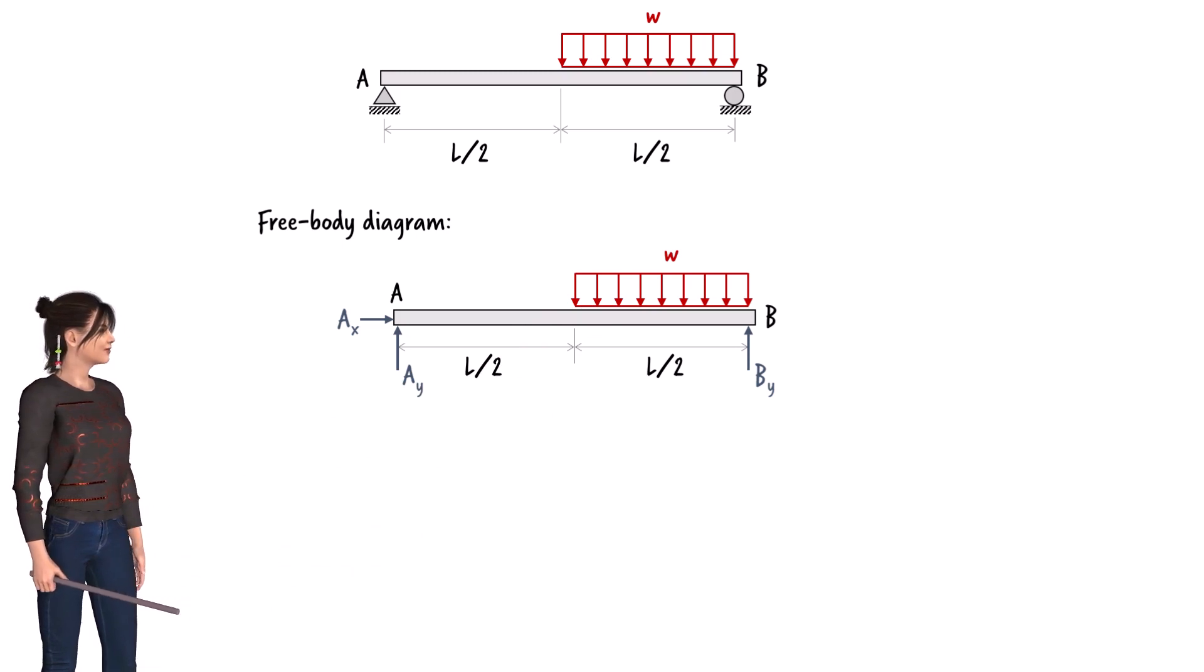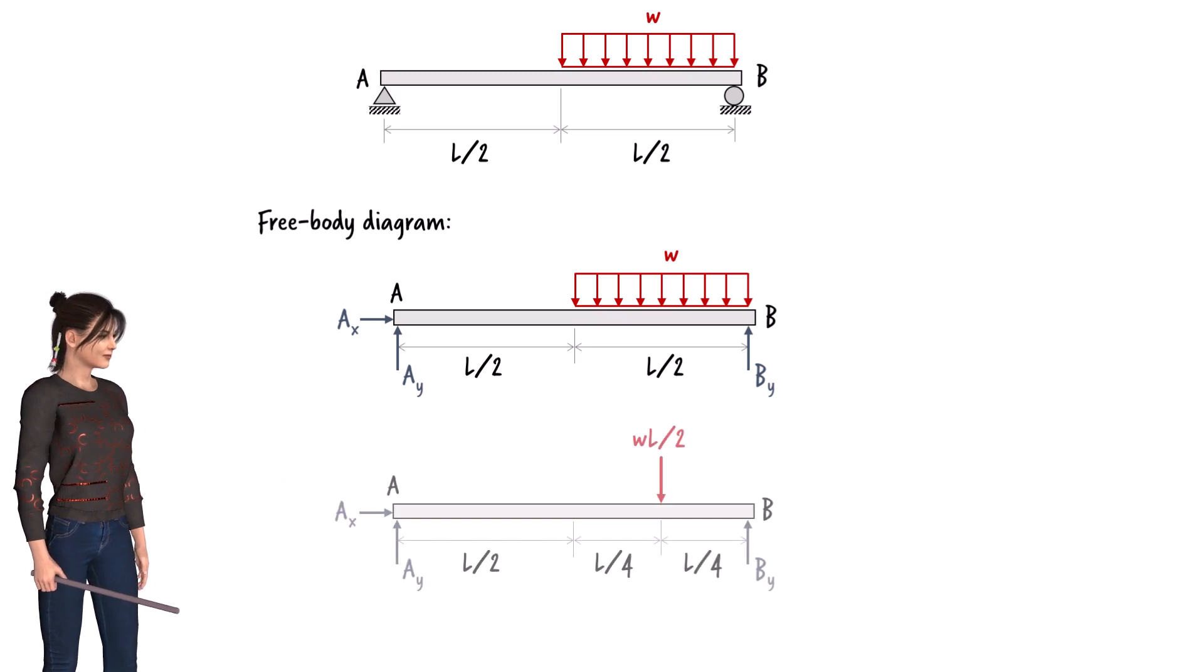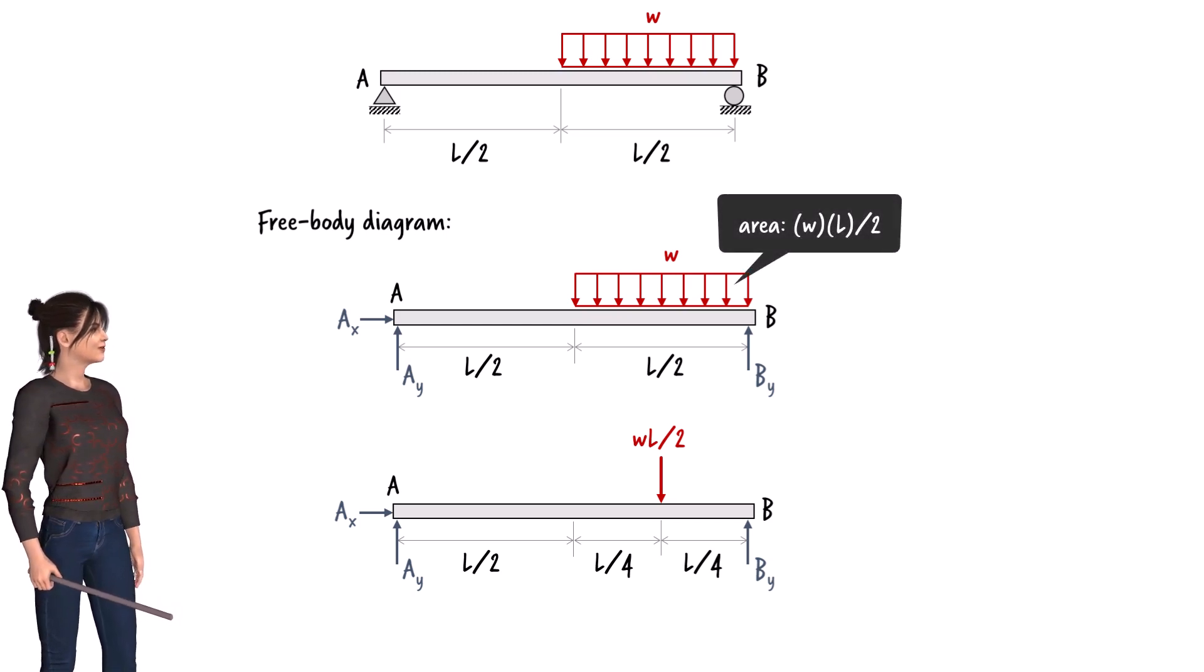Let's replace the rectangle with a point load. The magnitude of the load is equal to the area of the rectangle. We need to place the point load at the center of the rectangle. Since the rectangle's height is W and its base is L over 2, its area equals W times L over 2.